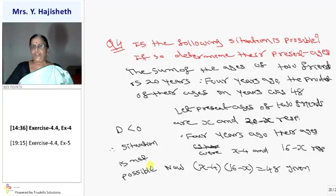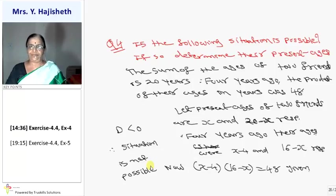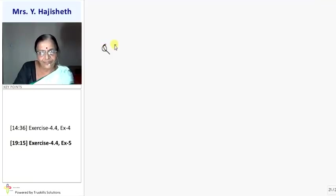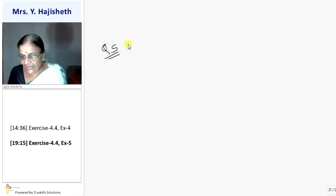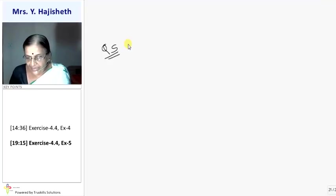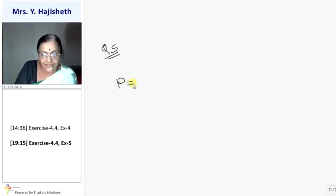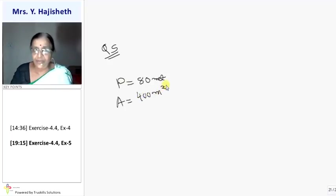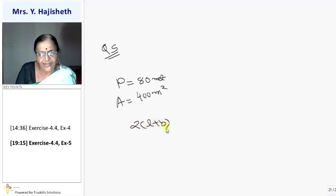Question 5: Is it possible to design a rectangular park with perimeter 80 m and area 400 m²? Perimeter = 2(L + B) = 80, so L + B = 40. Let length be x, so B = 40 − x. Area = L × B = x(40 − x) = 400.